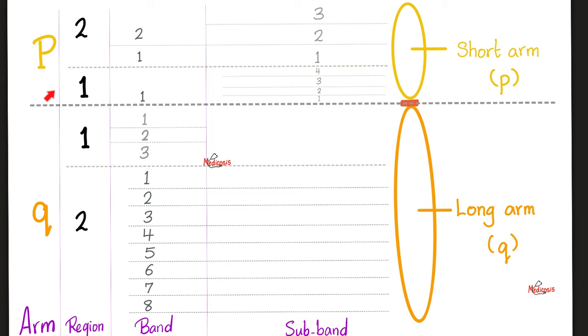So how many arms does the chromosome have? Short arm and long arm. Let's dig deeper. Each arm has regions. For example, P has one and two. First region, second region. Same thing with Q. So each one has two regions. Each region has bands. Region number one on P has just one band, but region number two has band one and band two.